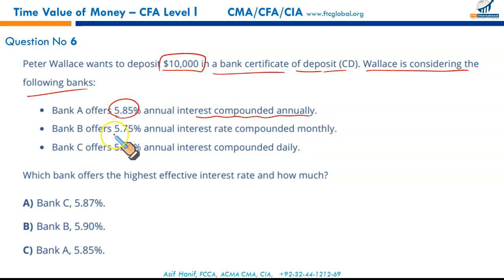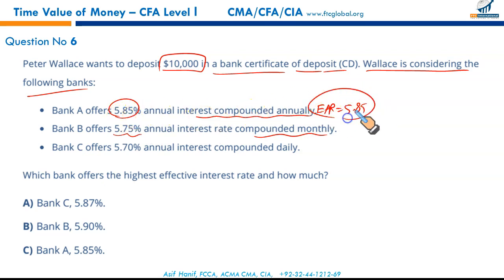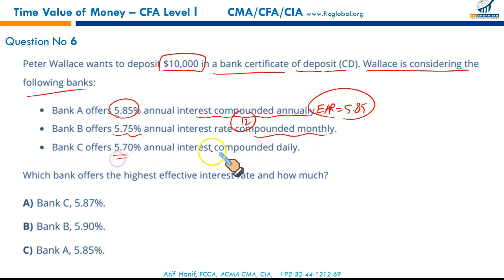Bank B is offering 5.75% annual interest compounded monthly; Bank C is offering 5.70% annual interest compounded daily (365 days). The question asks which bank offers the highest effective interest rate. For Bank A — compounded annually — the effective annual rate equals 5.85%. For Bank B, we need to calculate.